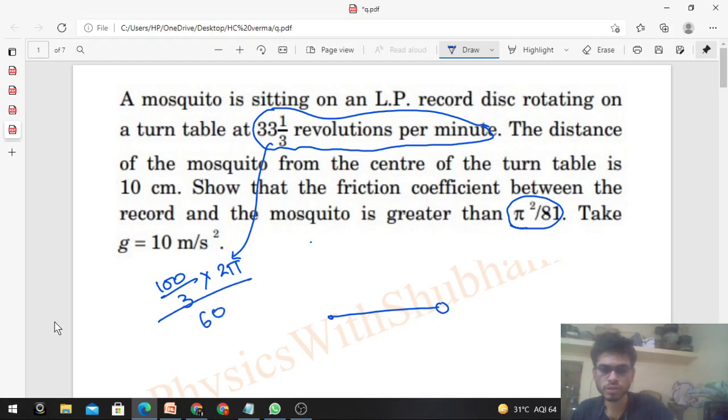30 and 10 cancel, so it's coming out to be 10π/9. So the angular speed is 10π/9.